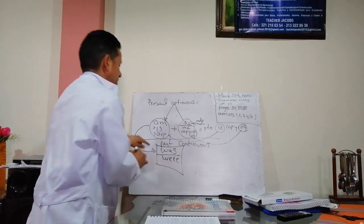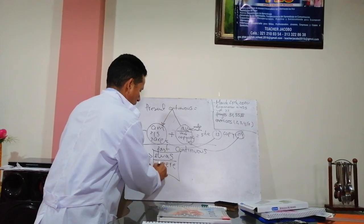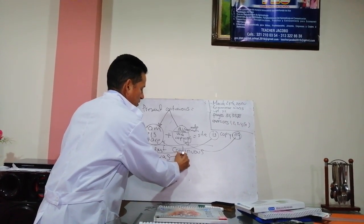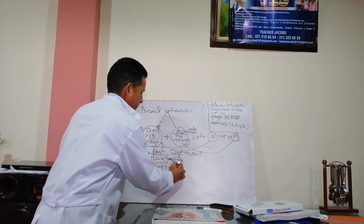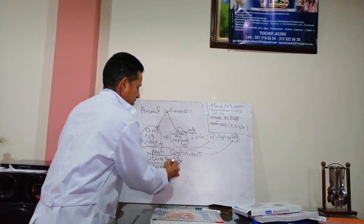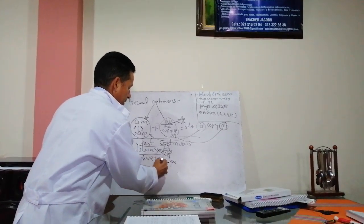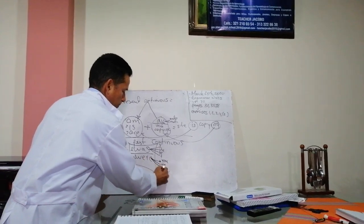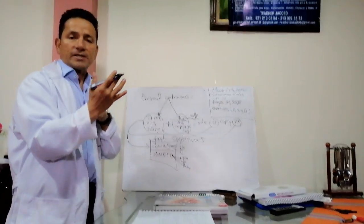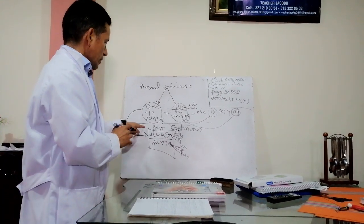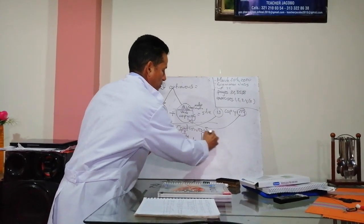Es importante saber que was siempre va a ser singular y were siempre va a ser plural. Entonces, en was vamos a utilizar los pronombres en singular. O sea, estos pronombres como I, she, he, it son singular, son uno solo. Y en were siempre vamos a indicar que es plural. O sea, utilizamos los pronombres en plural. Sin embargo, no se les olvide que la palabra yo es singular o es plural. Luego, en pasado tenemos dos palabras. Este siempre debe estar acompañado con el ING.